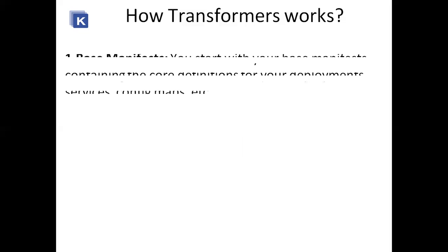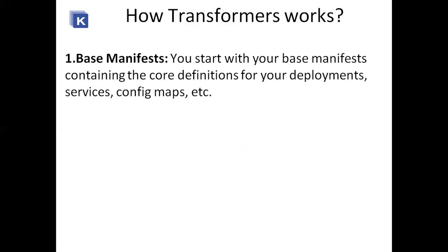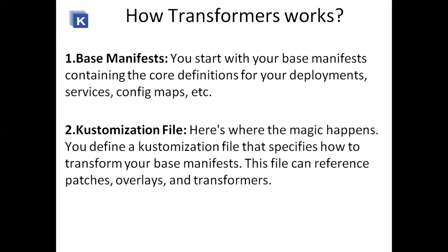This enables environment-specific configurations without altering the core deployment definitions. How do transformers work? You start with your base manifest containing the core definitions for your deployments, services, config maps, etc. Then the Kustomization file comes into the picture — here the magic happens. You define a Kustomization file that specifies how to transform your base manifest. This file can reference patches, overlays, and transformers. Without touching the base manifest, whatever changes or transformations need to be done are made in the Kustomization file.